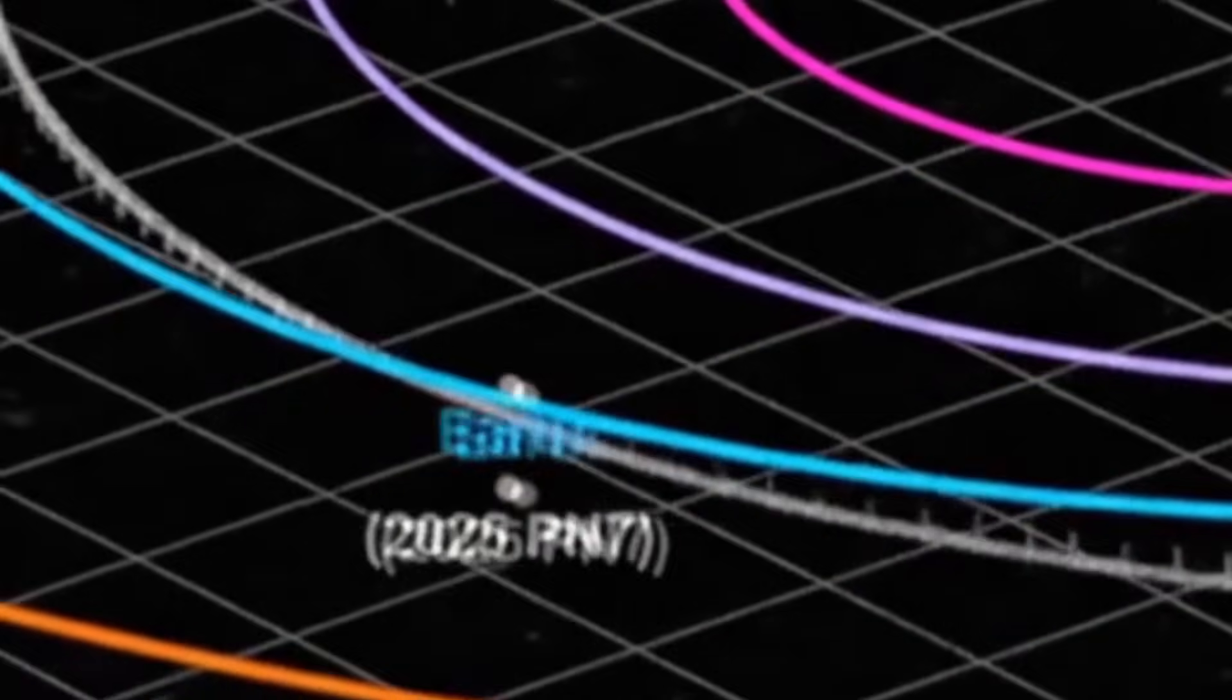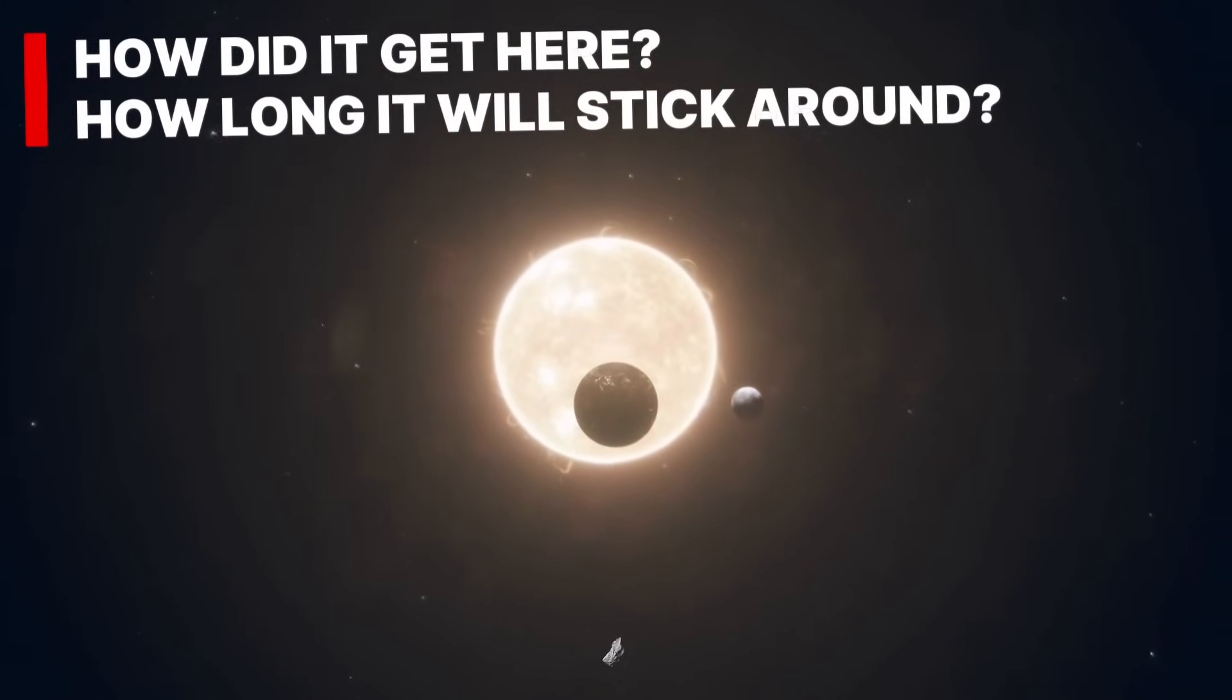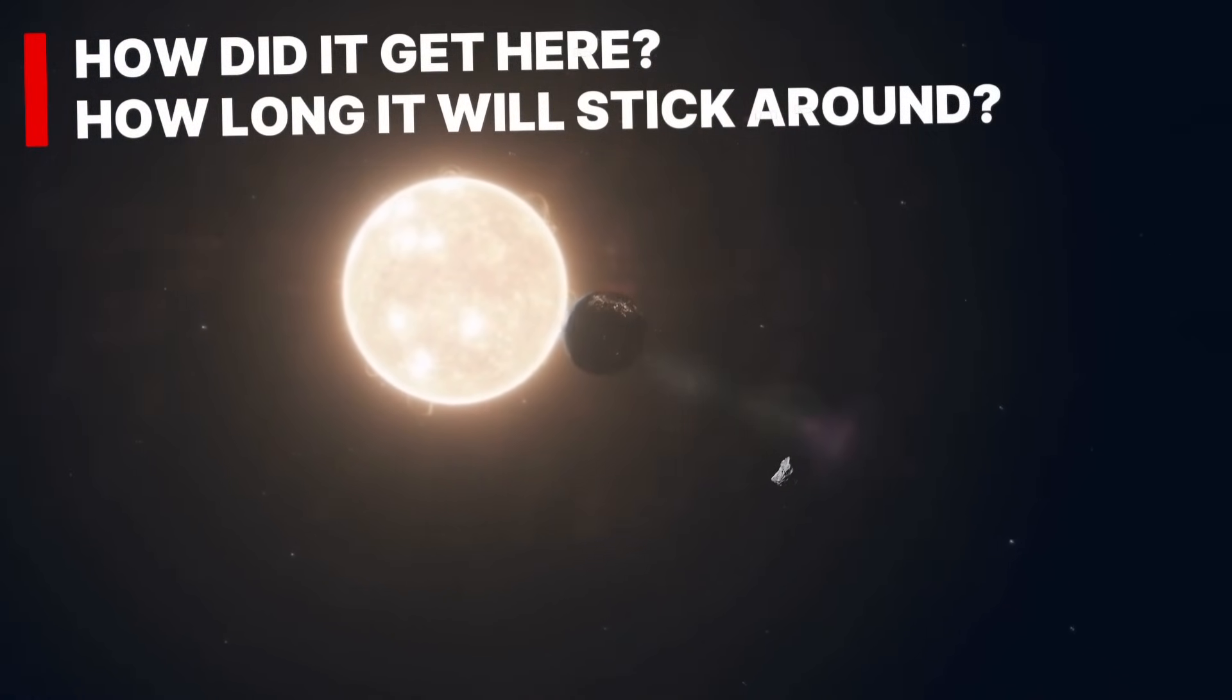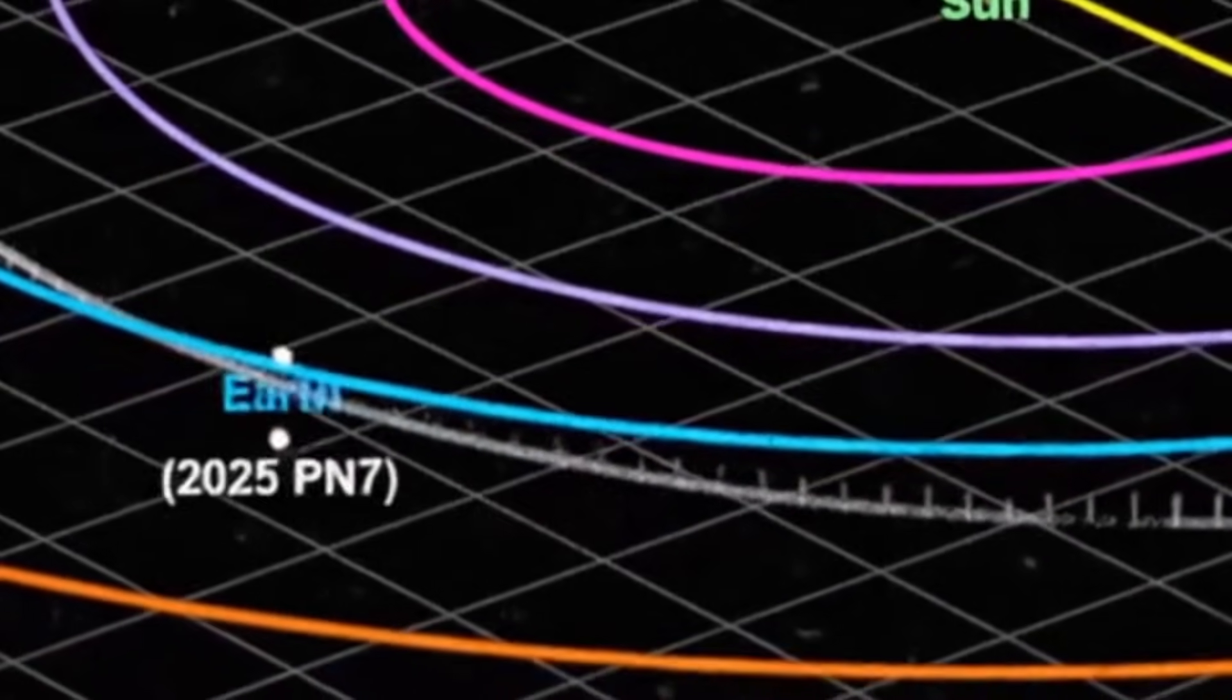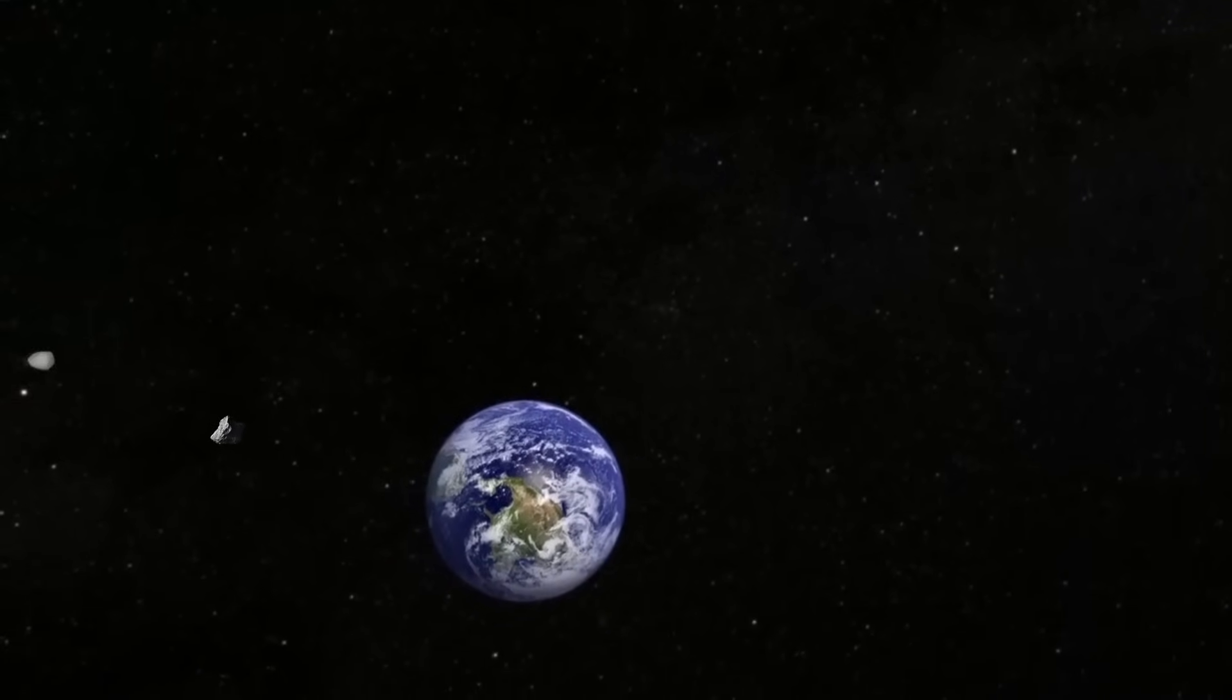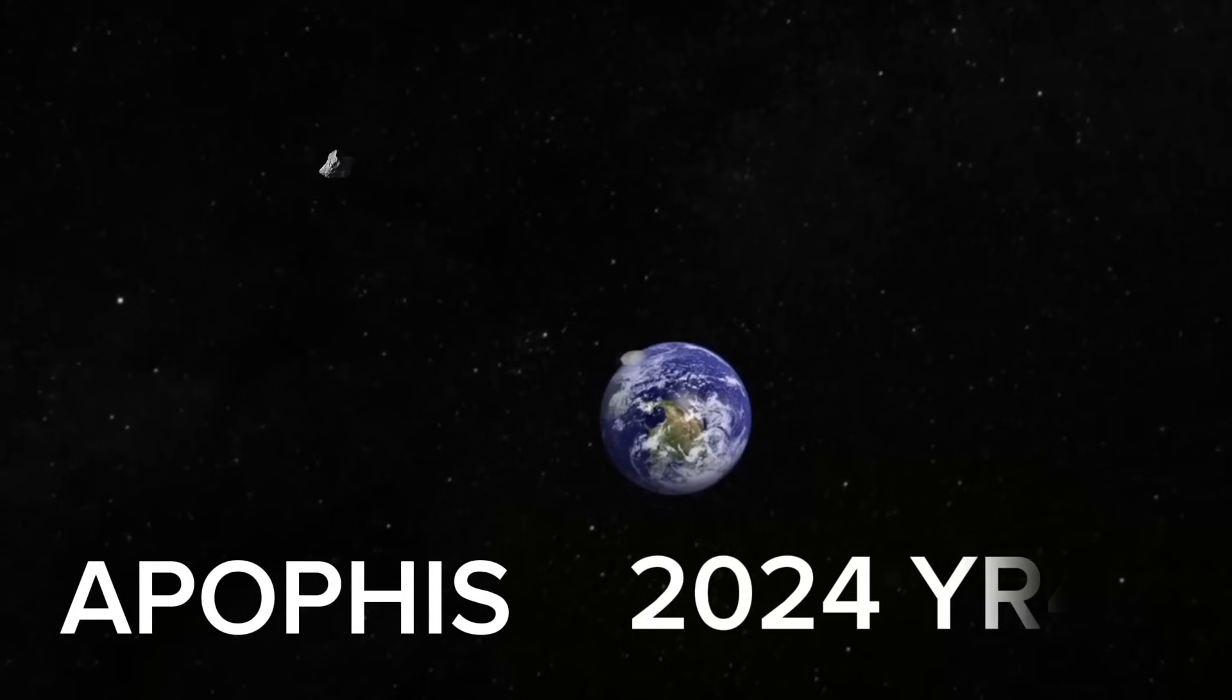So, what exactly is 2025 PN7? How did it get here? How long will it stick around? And most importantly, will it have any impact on Earth? Scientists are also considering whether this object might have any influence on the upcoming close flybys of asteroids Apophis and 2024 YR4.